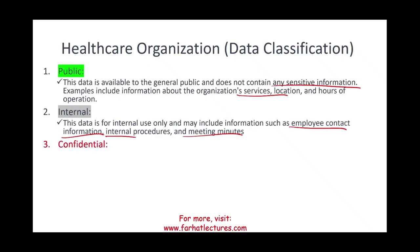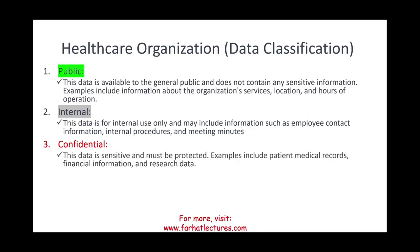Then we could have a confidential classification. For each classification, the company will have its own description so employees understand what is public, internal, or confidential. Confidential information must be protected. Examples include patient medical records, financial information of the company — assuming it is a private company — and research data that is confidential.